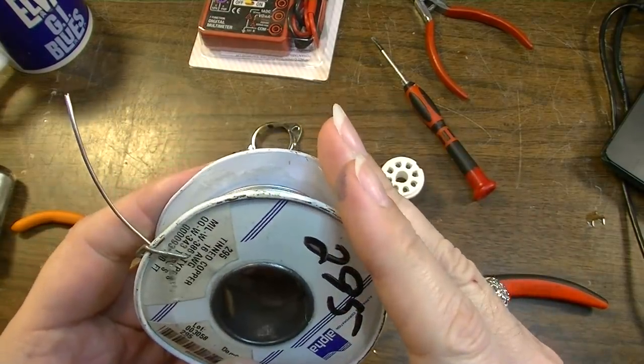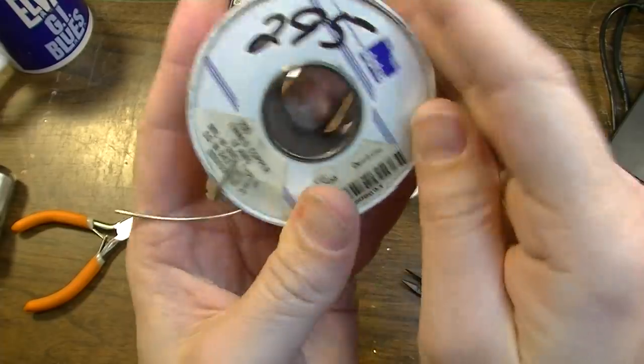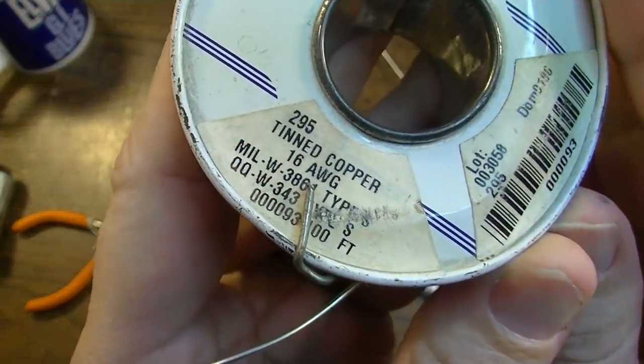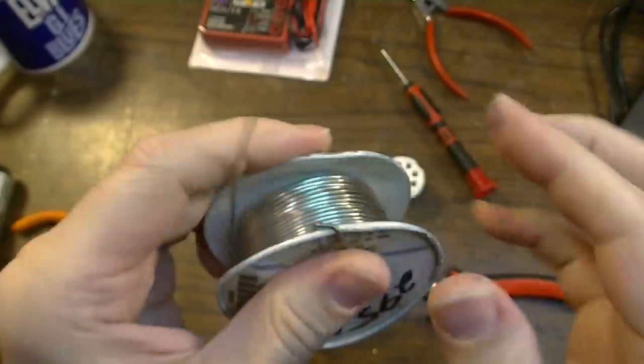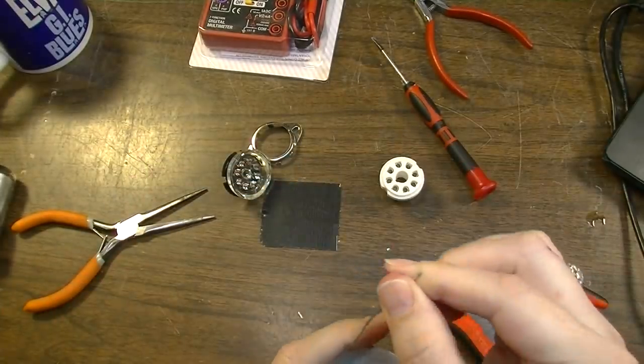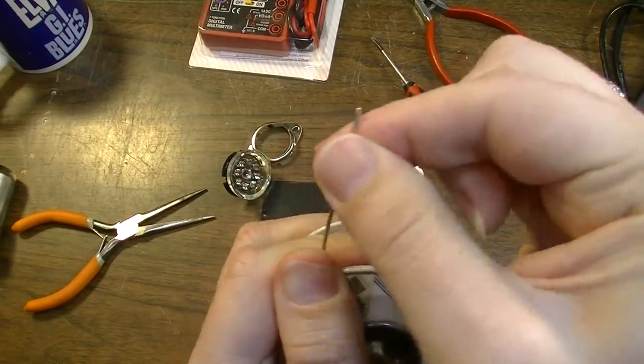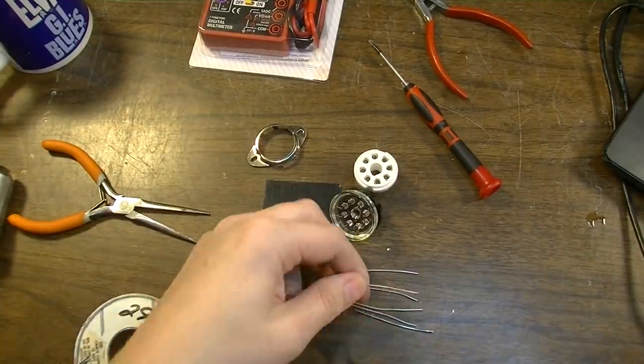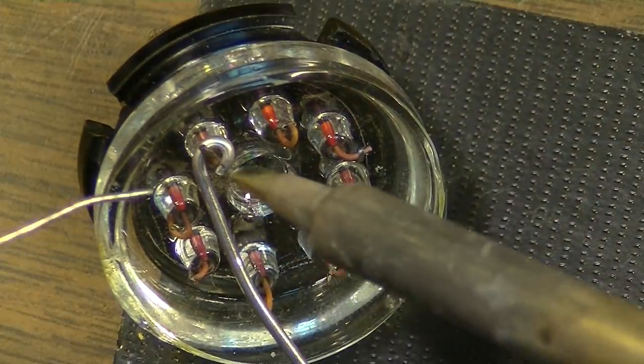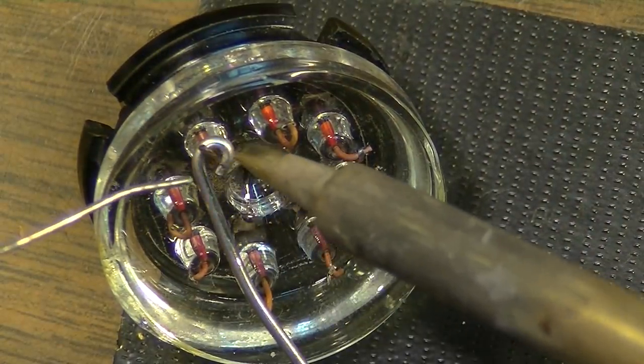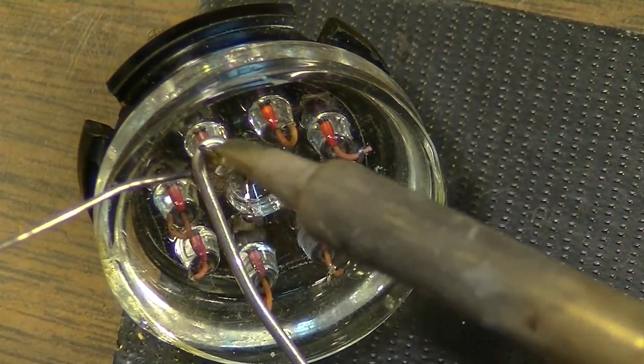What I have on hand here is I have a 16-gauge tinned copper wire, and this is what I'm going to use to make these connections. And the reason is this is fairly thick wire, and it's going to hold up well. It's not going to bend on me.